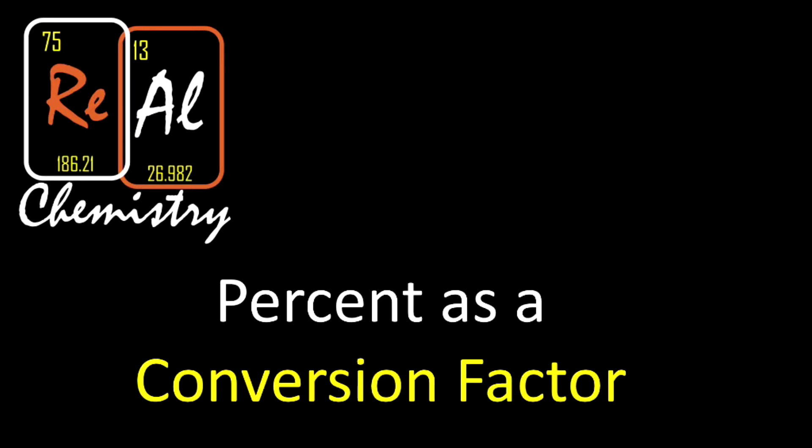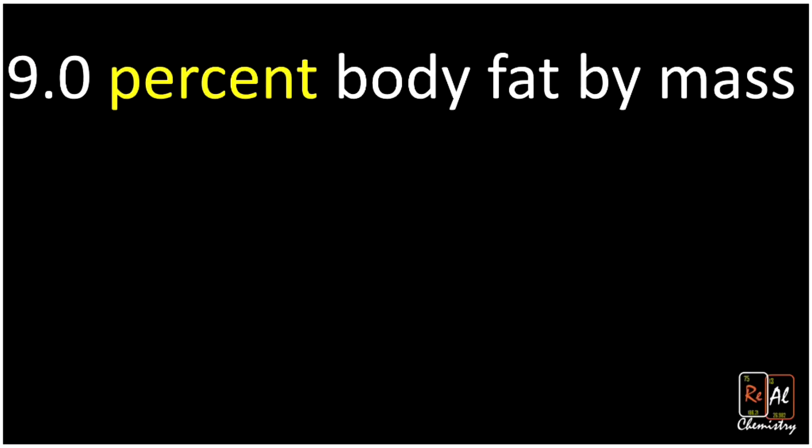We're going to talk about what percent means and then use it in a practice problem. First, let's think about what percent means. One measure of how lean someone is is their percent body fat. If you're a trained athlete, you might be 9% body fat by mass. What that means is out of every 100 pounds that you weigh, 9 of those pounds are fat.